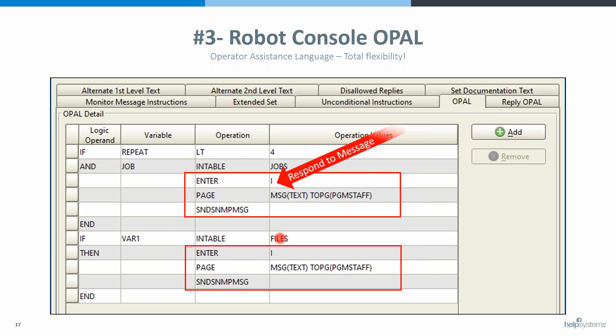We're also saying: if VAR1 — which happens to be the variable for the file — is in a table called FILES, we're going to reply 'I' again, page, and send a trap. This one has no repeat, so we'll do it as often as the message set is allowed to run. This is a pretty sophisticated rule — we're limiting it very specifically to certain jobs and certain files so it doesn't get carried away.